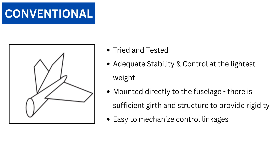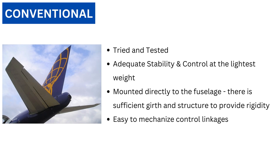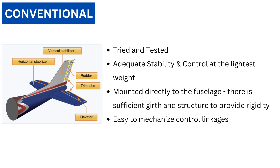Conventional Tail: This is the most common type of tail configuration and therefore it is tried and tested. We should always consider this type for a new aircraft design, unless some special requirement requires an alternative solution. For most designs, it will provide adequate stability and control at the lightest weight. As the horizontal and vertical tail are directly mounted to the fuselage, there is sufficient girth and structure to provide rigidity. Moreover, it is easy to mechanize the control linkages.